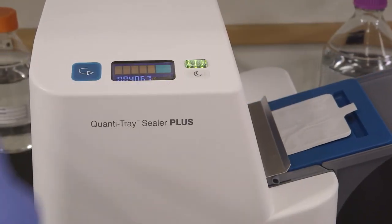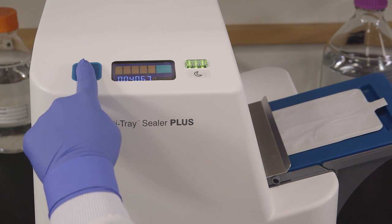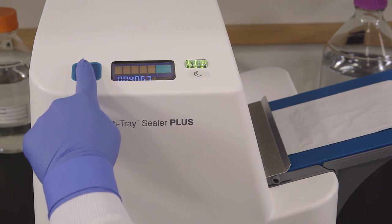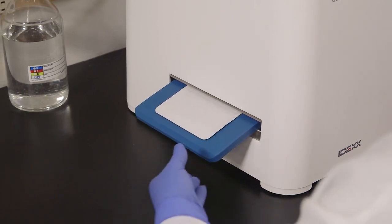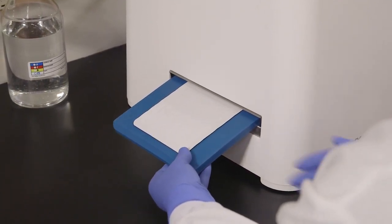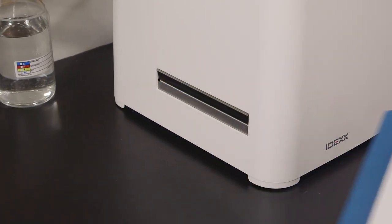If you need to reverse the motor, press and hold the reverse button. However, do not reverse the motor if the rubber insert is completely inside the sealer. The sealer distributes the sample mixture into the QuantiTray wells, seals the wells, and partially ejects the sealed tray. Remove the rubber insert and tray from the sealer.